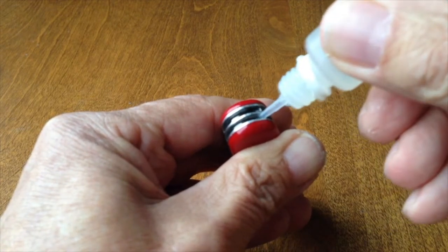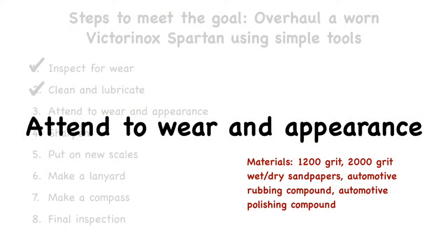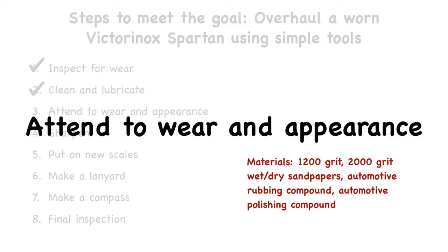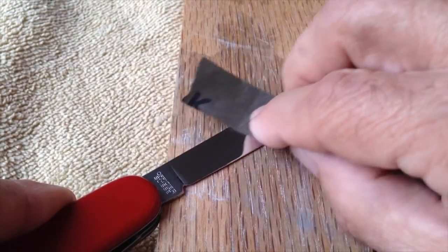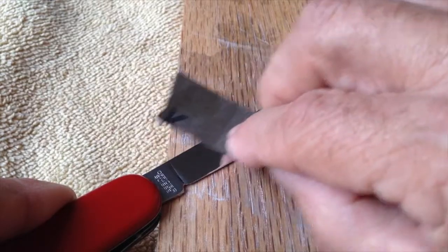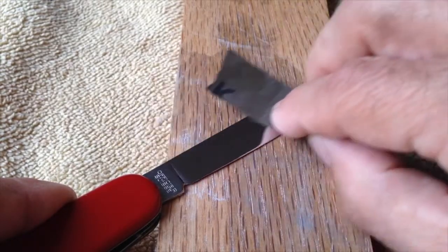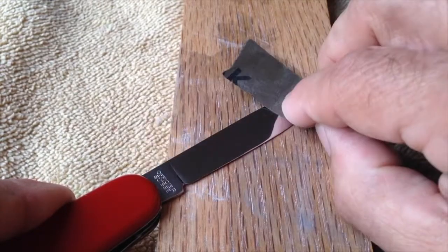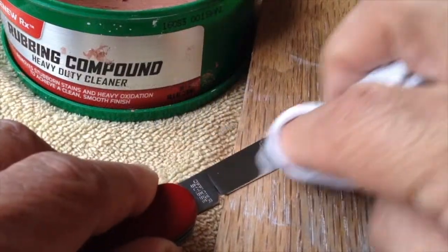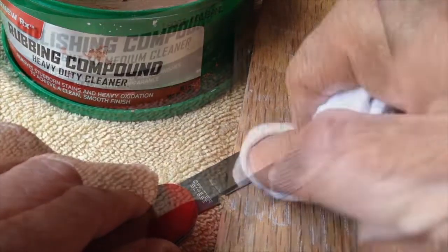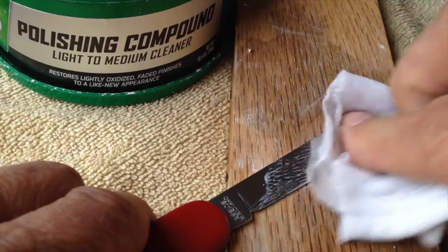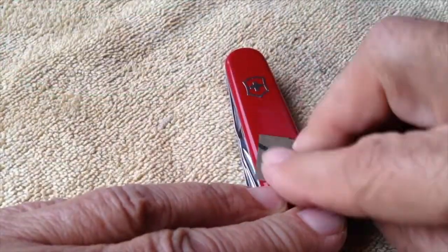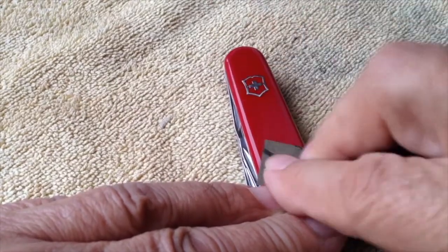The main blade and other tools show minor scratches. I hold the blade against a flat surface to minimize injury and not damage the blade. Starting with 1200-grit wet-dry sandpaper to remove these scratches. Once the scratches are removed, I use 2000-grit paper to remove the scratches I made from the 1200-grit paper. I finish by buffing with automotive rubbing compound and then less abrasive automotive polishing compound.